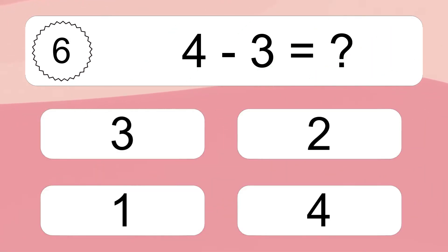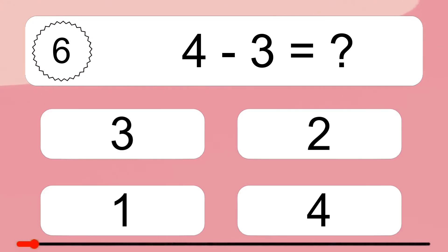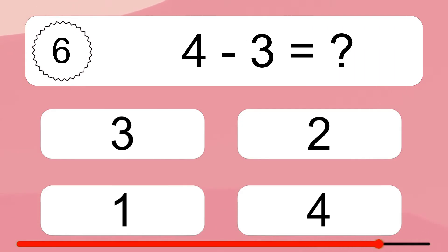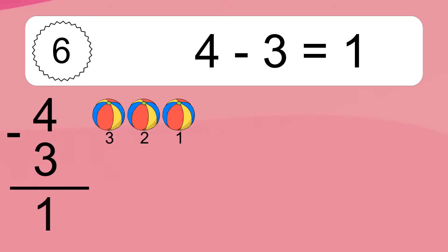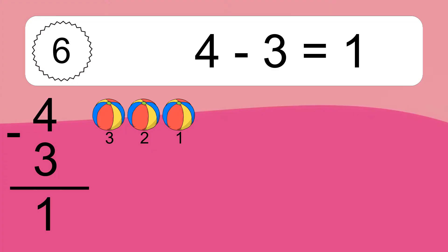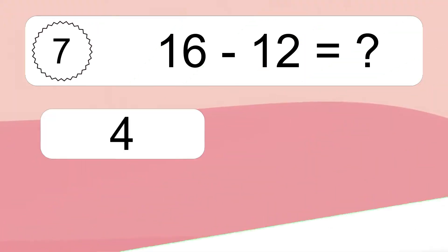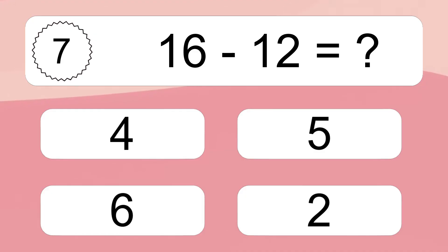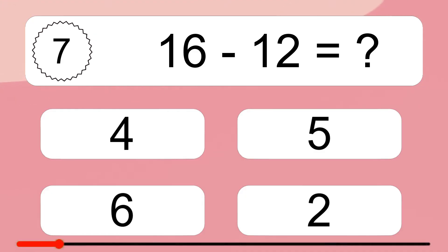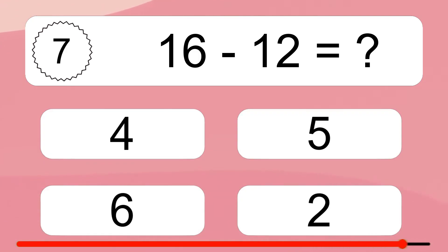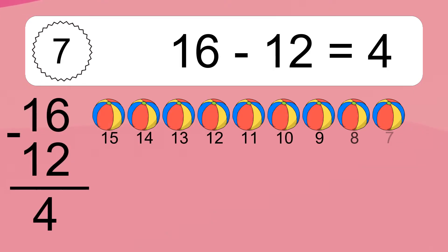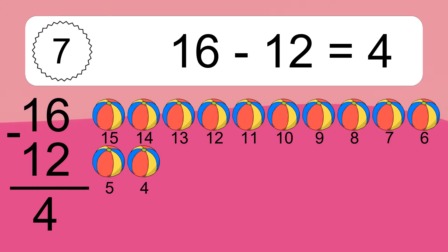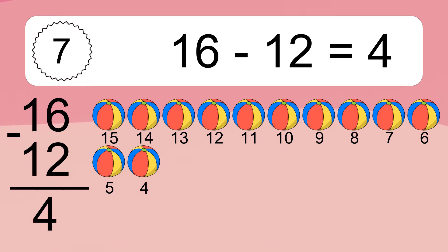4 minus 3 equals 1. Let's count it: 3, 2, 1. 16 minus 12 equals what? 16 minus 12 equals 4. Let's count it: 15, 14, 13, 12, 11, 10, 9, 8, 7, 6, 5, 4.